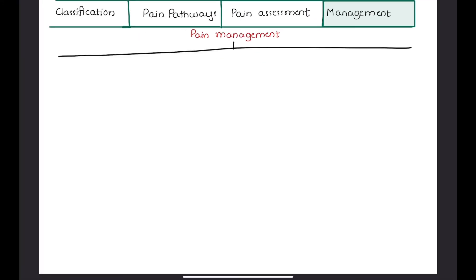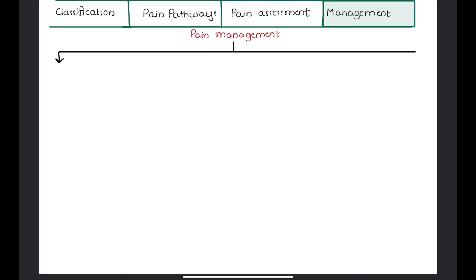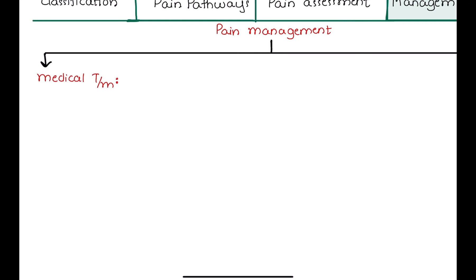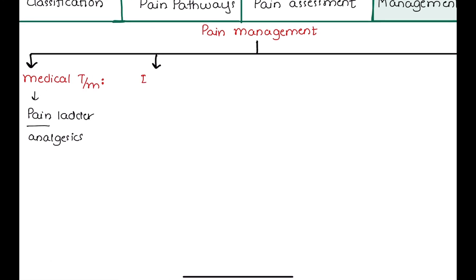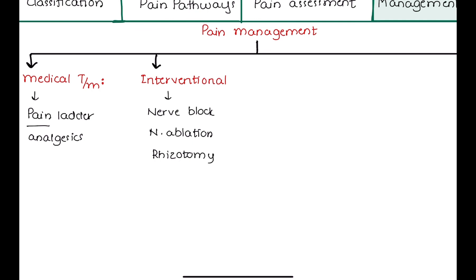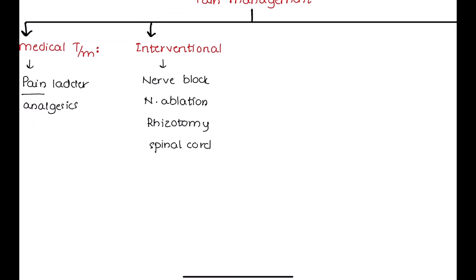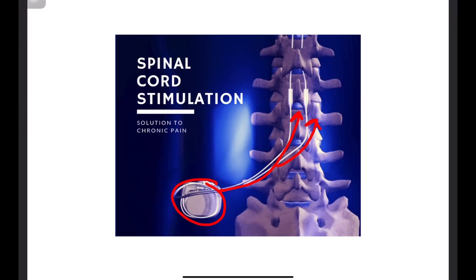Pain can be treated through a variety of methods, including medications given in a step-ladder fashion. Management of severe chronic pain may require interventions such as destroying nerves with a chemical, known as nerve block, or destroying them with an electric current, known as nerve ablation. Rhizotomy is a surgical procedure to remove the nerve roots causing the pain. A spinal cord stimulator is a small device surgically placed under the skin that sends signals to the spinal cord to modify pain signals from reaching the brain.